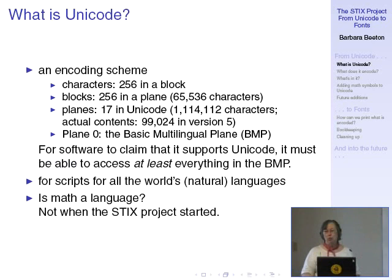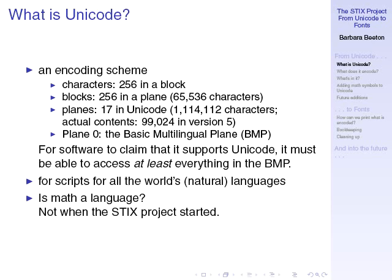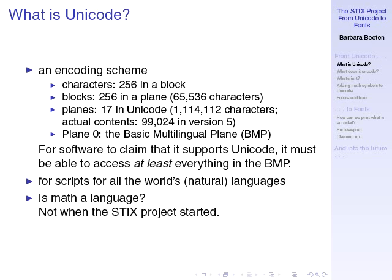What is Unicode? This is the coding system on which all modern computers are based. The scheme is divided into blocks. A full block contains 256 characters. A plane contains 256 blocks. There are 17 planes in Unicode because plane zero is not counted among the 16 that are allowed by the hex numeric scheme.